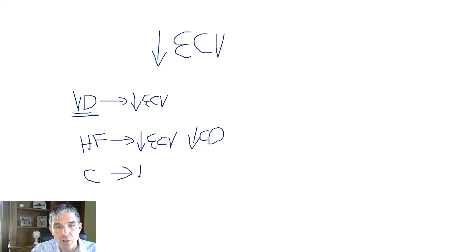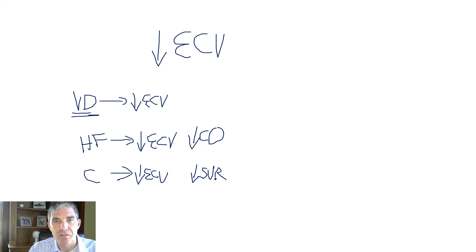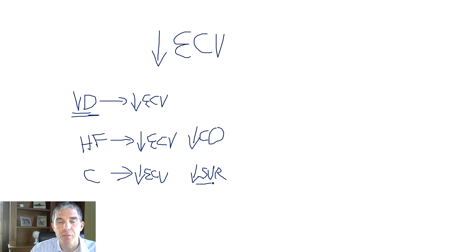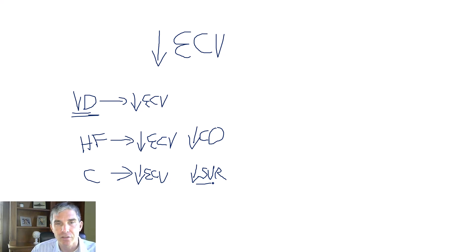In cirrhosis, there is also low effective circulating volume. The reason this happens in cirrhosis is because the systemic vascular resistance is low. In patients with cirrhosis, there's vasodilation of splanchnic blood vessels — those are the blood vessels in the abdomen — leading to low systemic vascular resistance. In this situation, the effective circulating volume, the volume of blood perfusing tissues, is low, even though patients with cirrhosis have lots of blood volume. They have ascites, a fluid wave in their abdomen, swollen ankles — there's no problem with low blood volume. And yet the body is going to respond the same way it does to volume depletion, because the ECV is low.